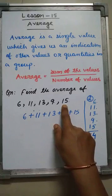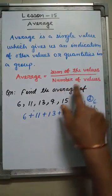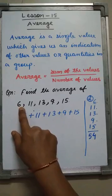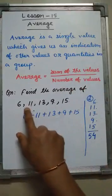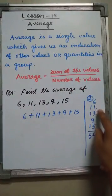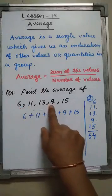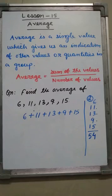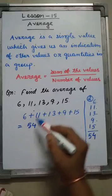I have taken from Activity 1 for explanation: find the average of 6, 11, 13, 9, and 15. To find the average, first of all I shall find the sum of the values. Sum of the values means I have to add these given values: 6 plus 11 plus 13 plus 9 plus 15. When you add the values, the sum is 54.